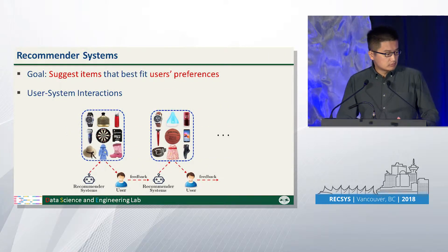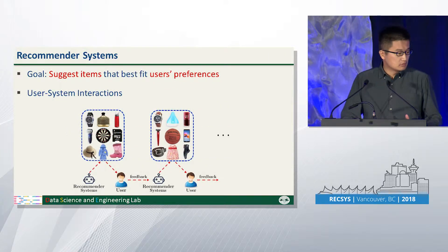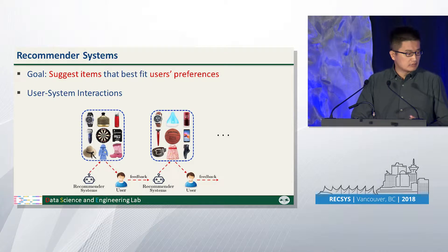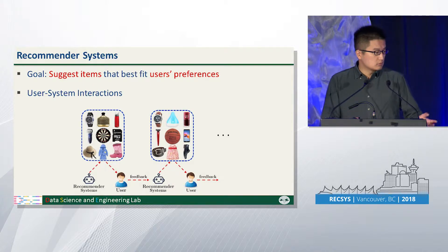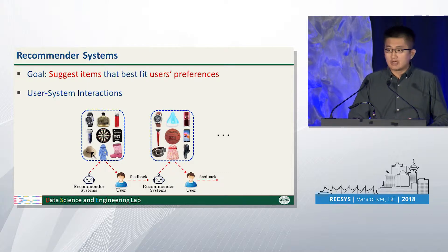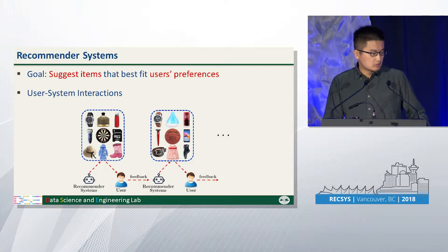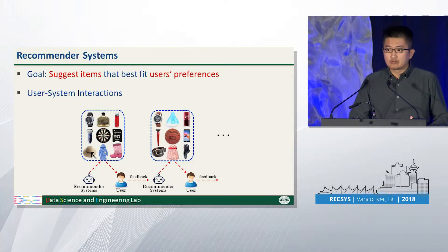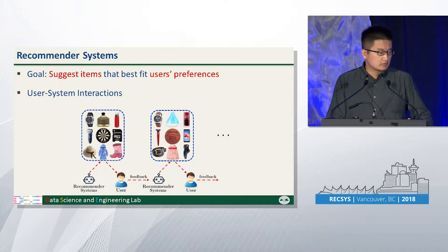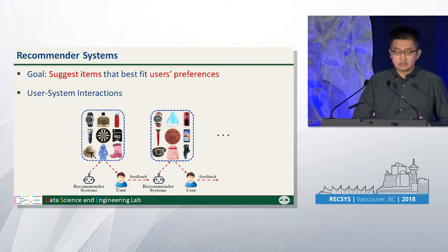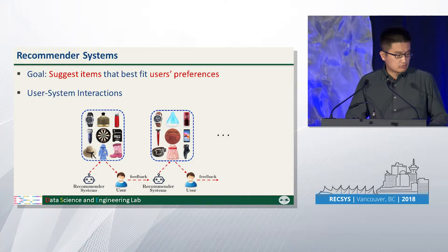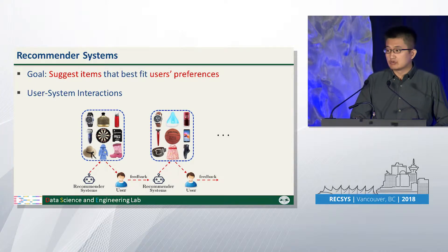The Recommender System intelligently recommends applications which aim to suggest items that better fit user's preference. This figure shows a typical example of the interaction between a user and the Recommender System. Each time the system recommends a page of items to the user, the user will browse these items and provide his real-time feedback. According to the feedback, the system will update its recommending strategy and recommend a new page of recommendations.